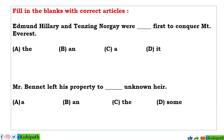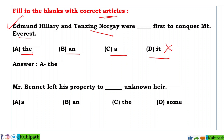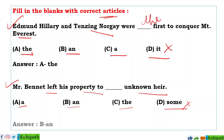Next: Articles question. 'Edmund Hillary and Tenzing Norgay were dash first to conquer Mount Everest.' Options: A: a, B: an, C: a, D: the. The correct answer is D — 'the'. Edmund Hillary and Tenzing Norgay were the first to conquer Mount Everest. Next: 'Mr. Bennet left his property to dash unknown heir.' The correct article is B — 'an'. Mr. Bennet left his property to an unknown heir.